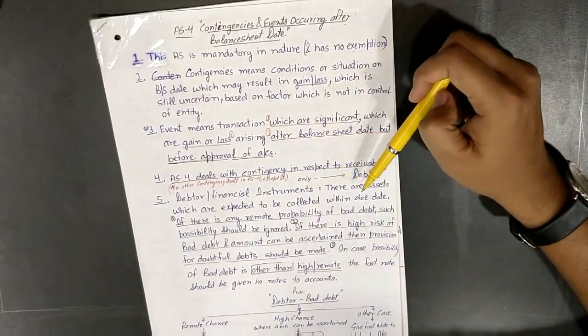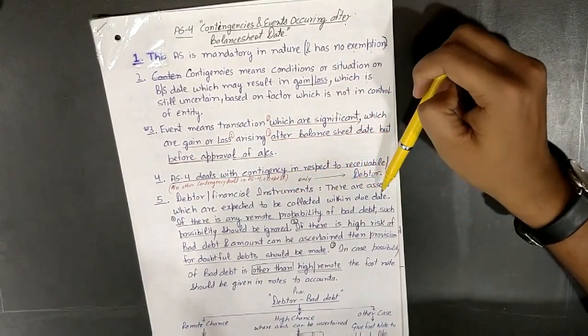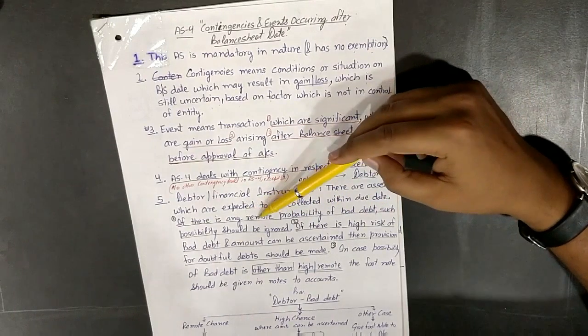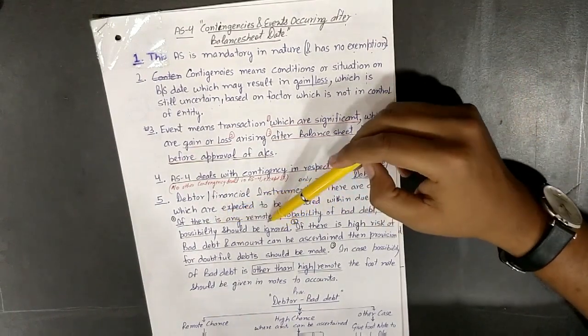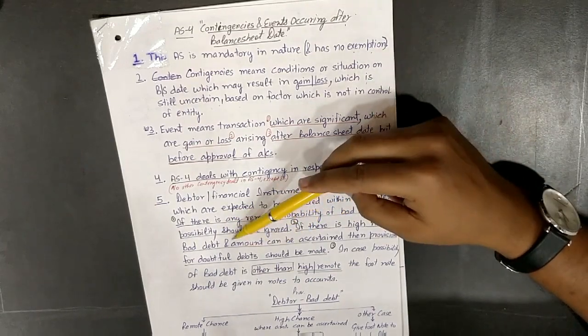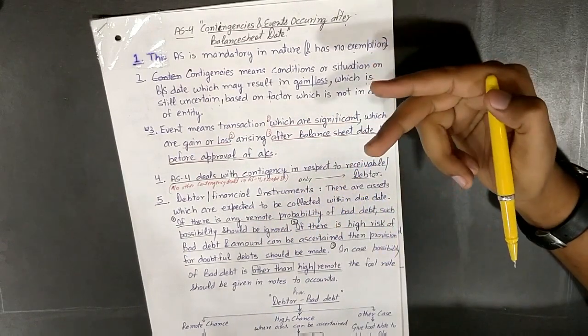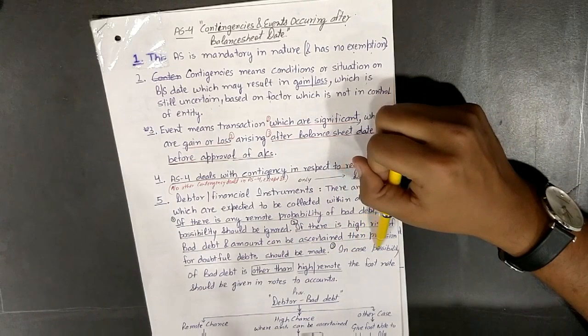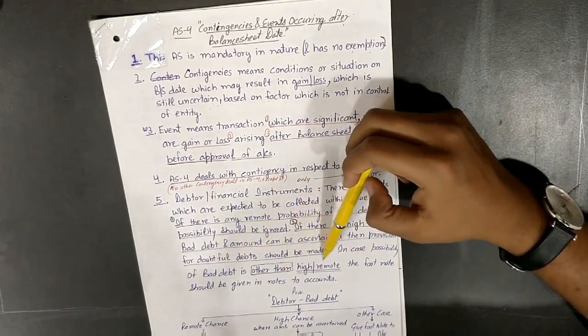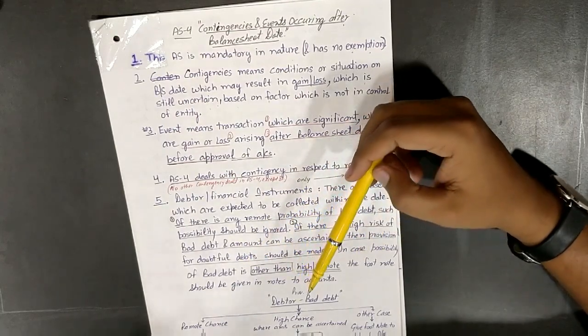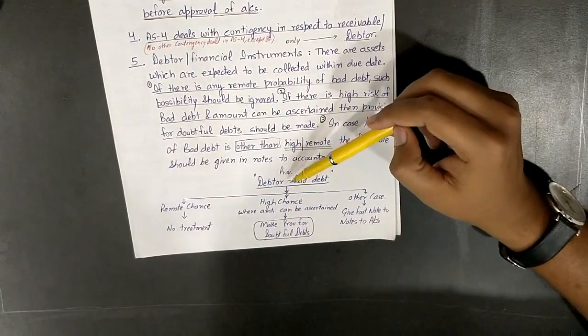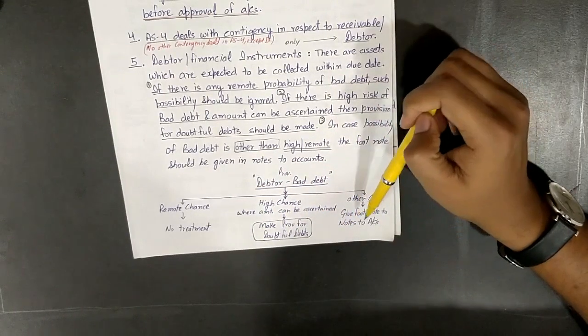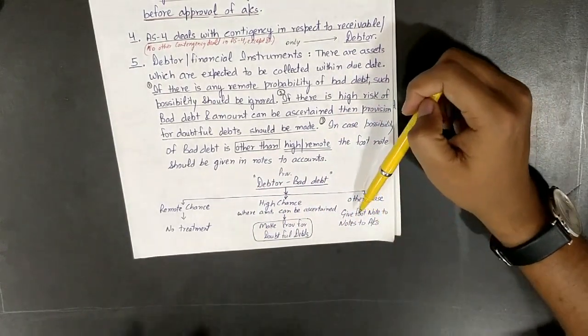Debtors or financial instruments are assets expected to be collected within due date. If there is any remote possibility of bad debt, such possibility should be ignored. If there is high risk of bad debt and amount can be ascertained, provision for doubtful debt should be made. In case possibility is other than high or remote, footnote should be given.